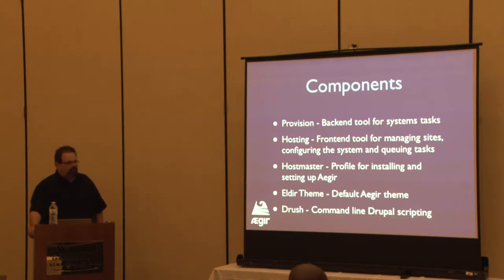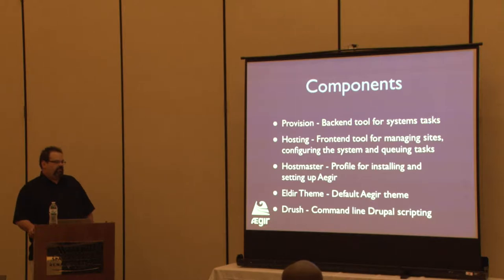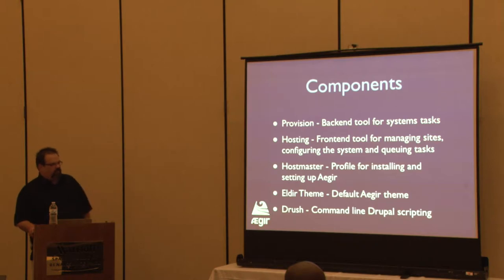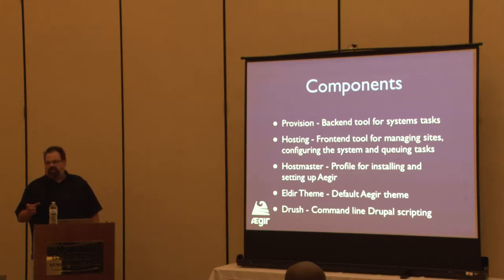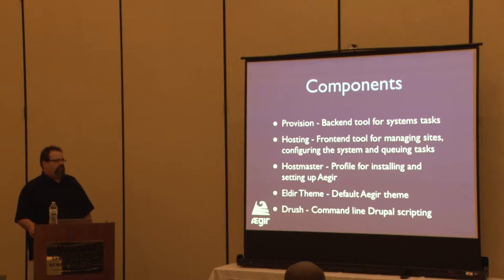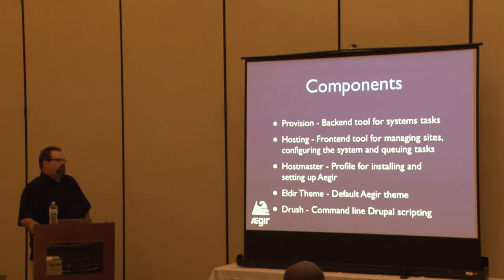As far as components of Aegir: there's the Provision piece, which is the back-end tool for all your system tasks. Aegir uses Drush and Drush make. Provision is actually a Drush command that Aegir executes in the background and handles things like migrating sites and cloning sites. Hosting is the front-end piece — it ties together a lot of what Provision and Hostmaster have. It's kind of three big chunks: three separate projects that make up the whole. Hosting is what you see when you go into the Aegir website — right now it's a Drupal 6 website that manages as many sites and platforms as you have.